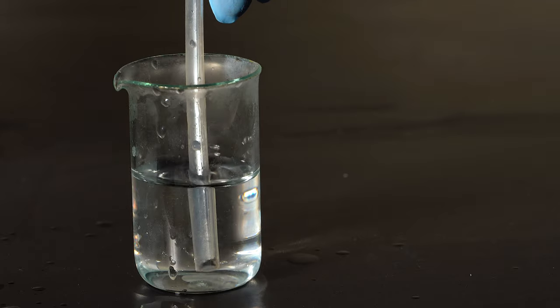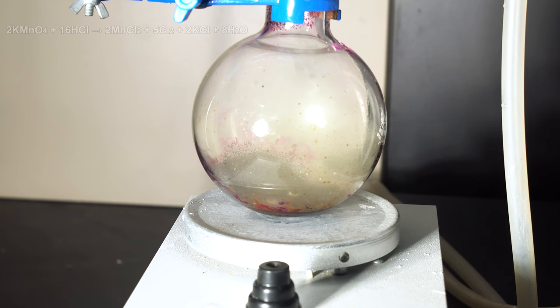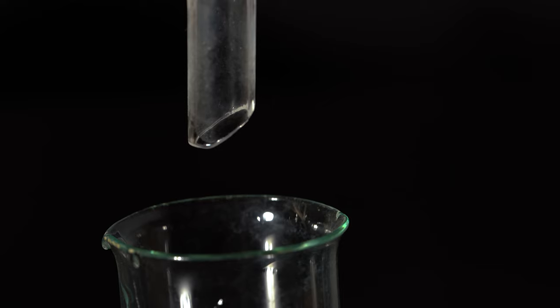The second required element for the reaction is chlorine. It doesn't matter whether it'll be dry or wet in this case. I will get it in a classic way, performing the reaction of potassium permanganate with hydrochloric acid.